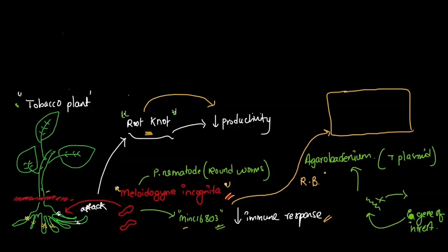After the introduction of this particular gene, now inside this plant cell, this gene will form double-stranded RNA. So in future, whenever Meloidogyne incognita — this parasite — comes and eats this transgenic plant,